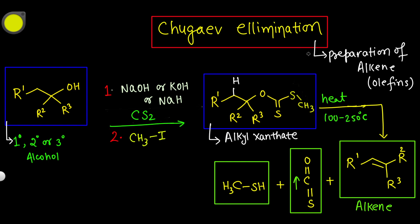In Chugaev elimination, it is the preparation of alkenes — or you can say olefins. The substrate we have taken here is an alcohol. You can take a primary, secondary, or tertiary alcohol. Here, we have taken a tertiary alcohol. In the first step, we have taken a base: either NaOH (sodium hydroxide) or KOH (potassium hydroxide).